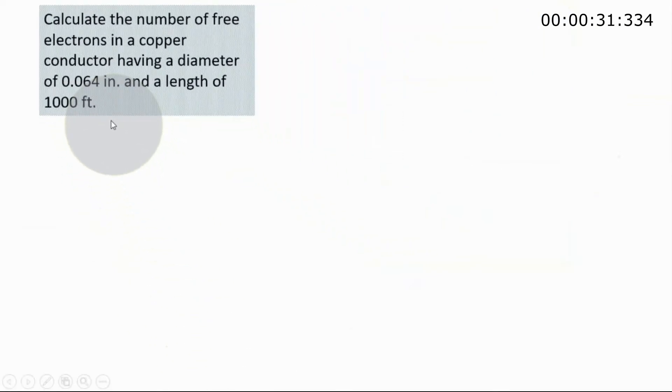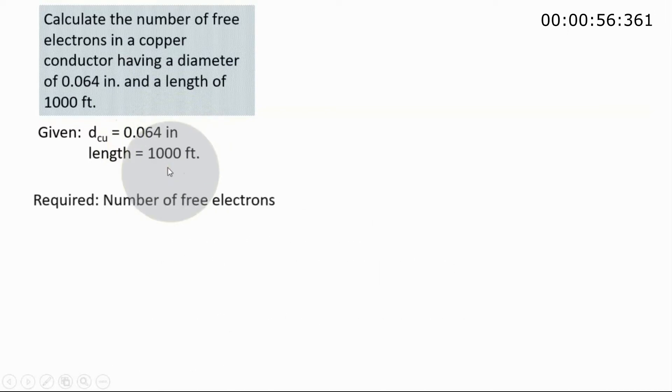The conductor given - again, the diameter and the length is stated here. The material that we are dealing with in this problem is copper. Its diameter is 0.064 inches and the length is 1000 feet. So we are required to get the number of free electrons in this material where the length is given and the diameter is given.